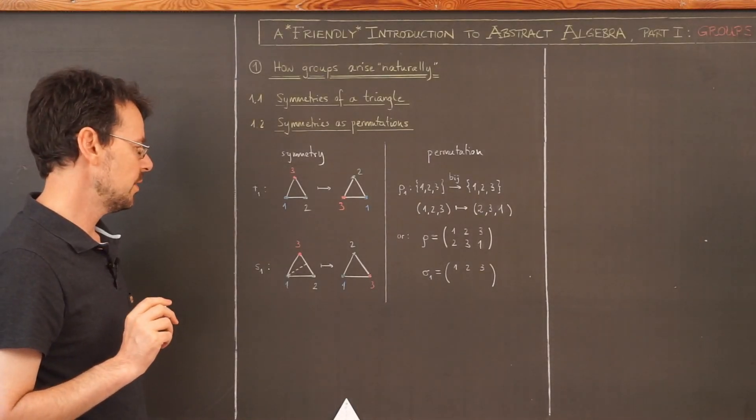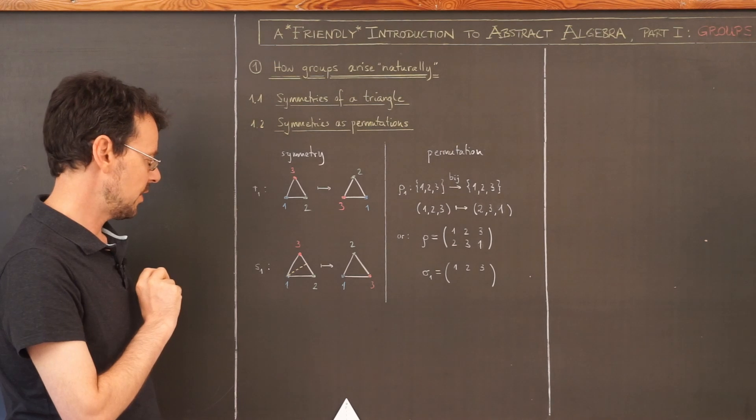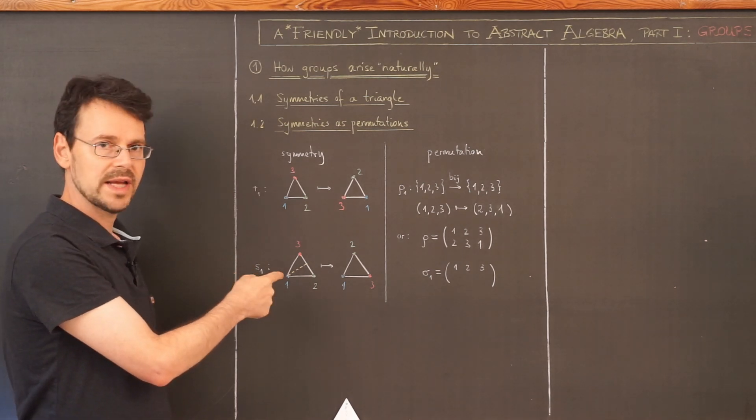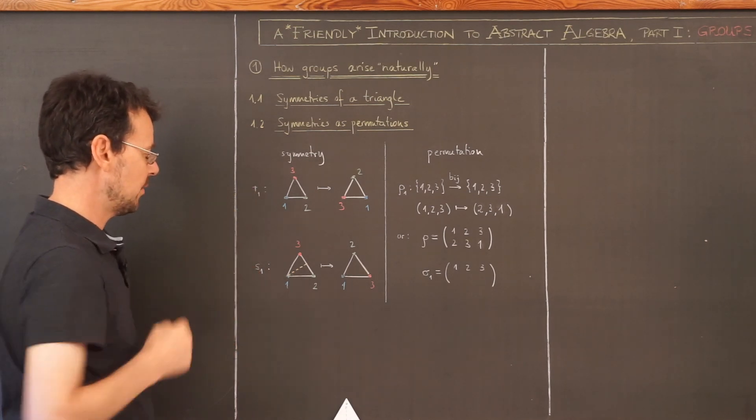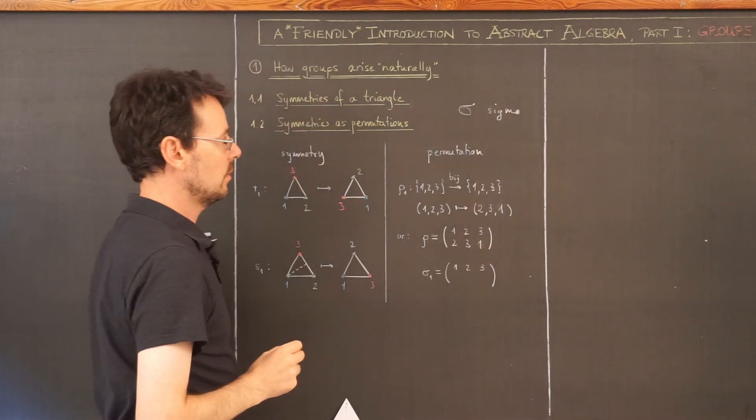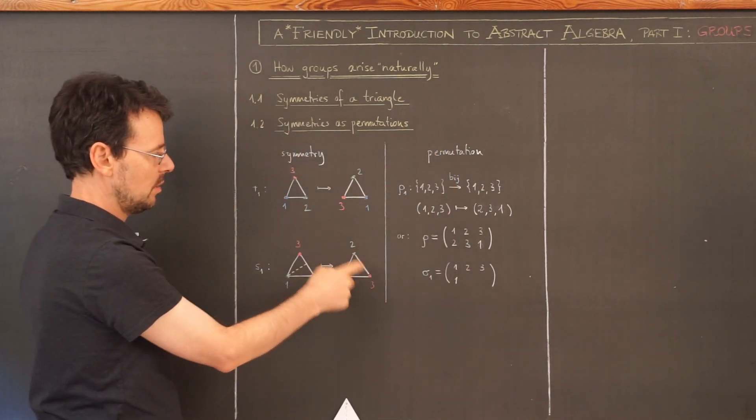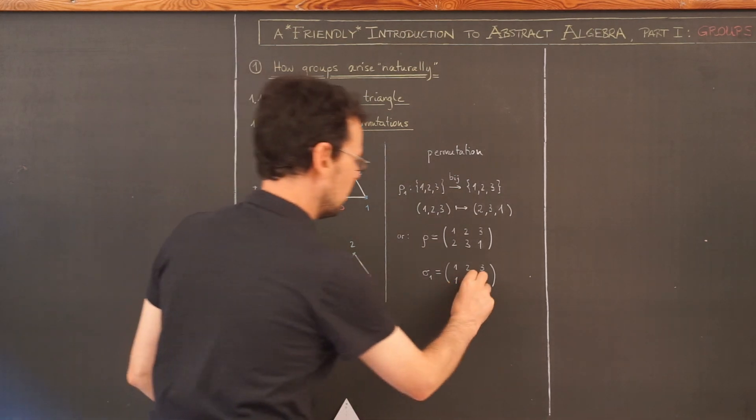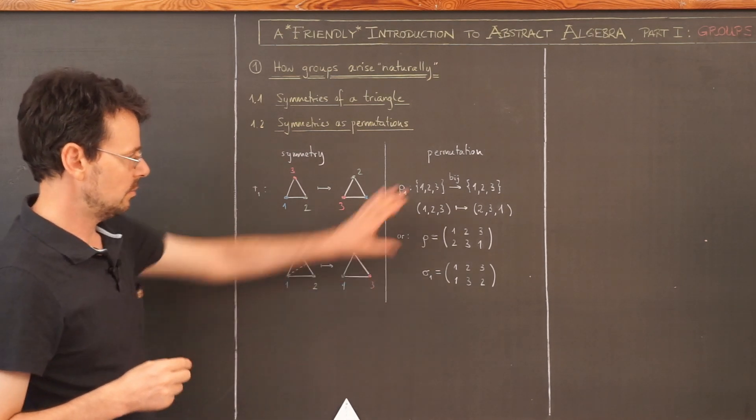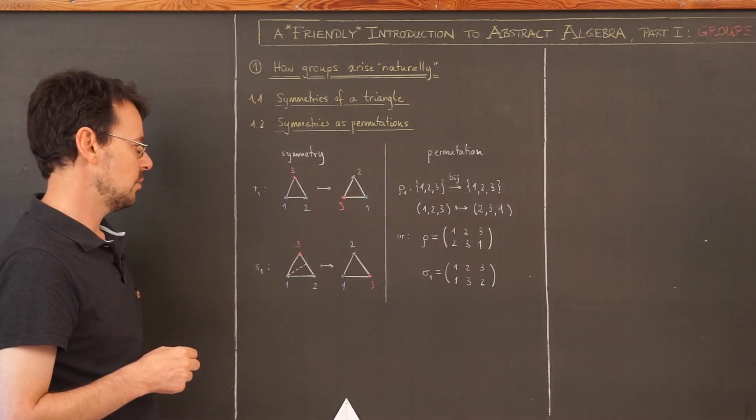In case you haven't seen the last video, rotation and reflection start with the same letter in English. So I took the German word for reflection Spiegelung which starts with an S, so we have R and S. And here I take a small Greek S, a sigma. Now sigma 1 does what? Vertex 1 stays where it is, so 1 maps to 1, and vertices 2 and 3 simply get interchanged. So 2 goes to 3, 3 goes to 2 and that's it. And we don't use this notation anymore, but from now on we simply use this very convenient notation for any permutation.